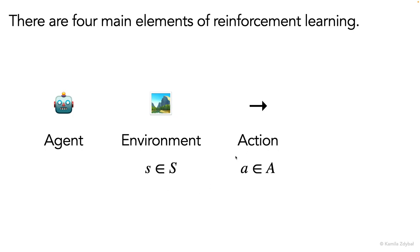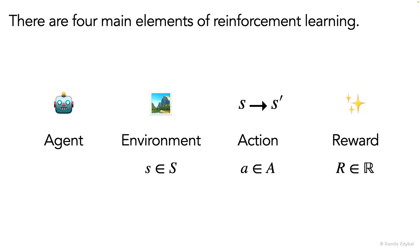We have an action a that the agent can execute in an environment, and that action has the ability to take the agent to some new state, let's say s prime. And we have rewards that the agent receives by achieving certain goals in the environment — for example, by walking towards some terminal state, we can reward the agent with some positive reward r.